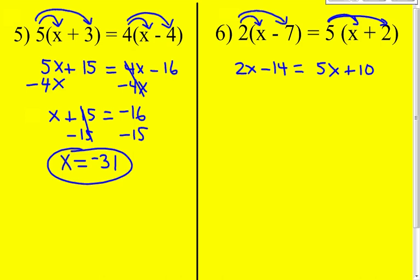Again, you have x's on both sides of the equal sign. I'm going to go for the smaller x and bring it over to the larger x. 2x minus 2x cancels. Bring down the negative 14. Bring down the equal sign. And 5x minus 2x is 3x. And I'm going to bring down the plus 10.